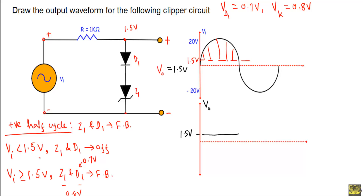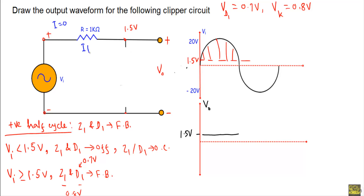But when VI is less than 1.5V, Z1 and D1 will be in the off state. Therefore, I can replace Z1 and D1 with open circuits. If I replace the diodes with open circuits, the current I will be equal to zero. As a result, the IR drop across this 1 kΩ resistor will be equal to zero. So the applied voltage will appear across the output terminal — VO will be equal to VI. As long as VI is less than 1.5V, it will take this wave shape, because the input is changing like this and the output will follow the same wave shape.